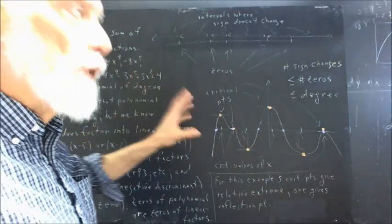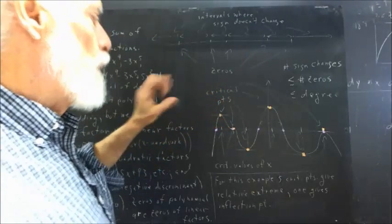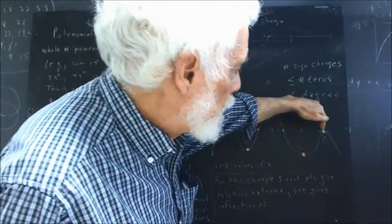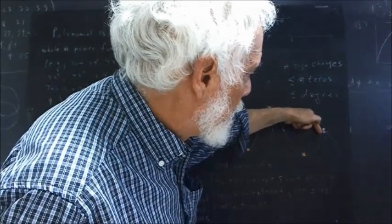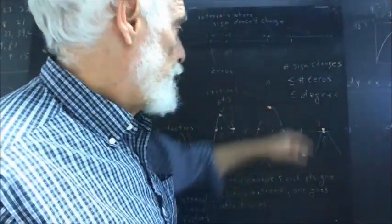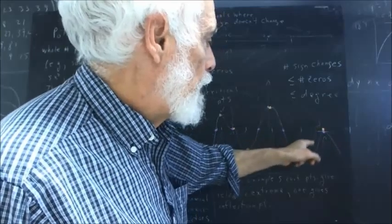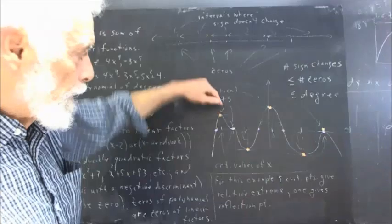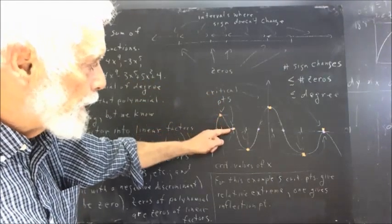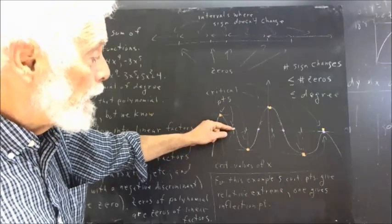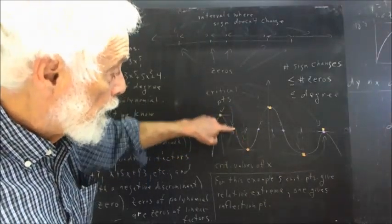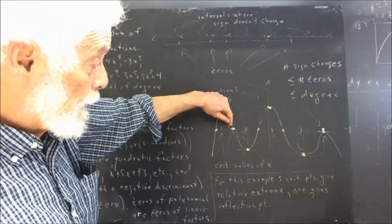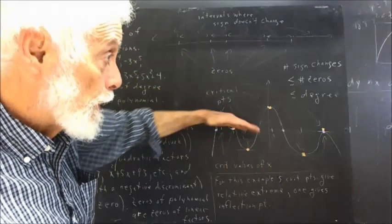The value of the polynomial can be zero only at those points. For example, we have a point where the function takes the value zero but comes up from the negative, turns around, and goes back negative — much like the vertex of a parabola. We have another point where the function comes down, levels off just as it passes through the zero, then turns around and dives down. The zero at this point is associated with that sort of behavior.